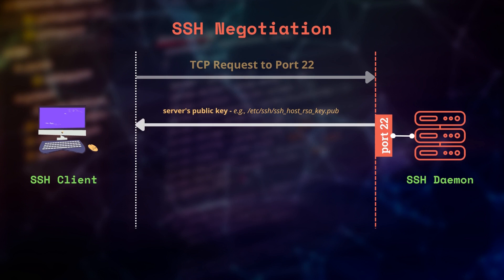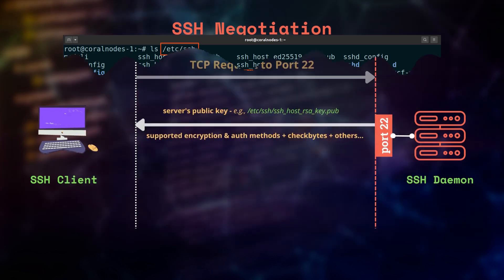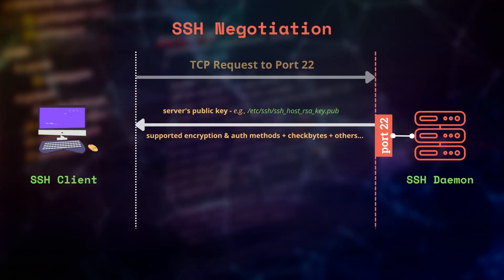The server sends this key to all clients. Most often, it is located inside the /etc/ssh folder. Along with that, the server also sends the list of encryption and authentication methods it supports.